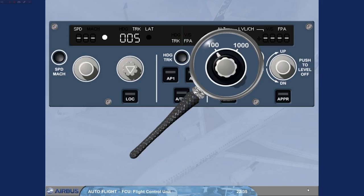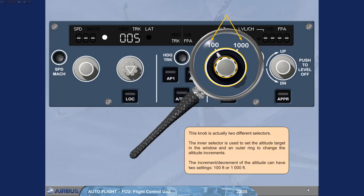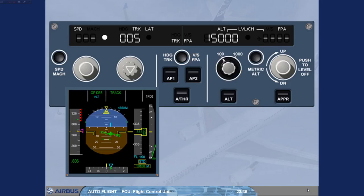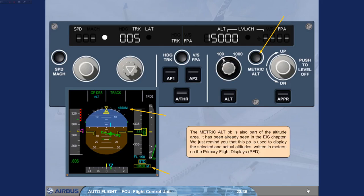This knob is actually two different selectors. The inner selector is used to set the altitude target in the window, and an outer ring changes the altitude increments. The increment or decrement of the altitude can have two settings: one hundred feet or one thousand feet. The metric altitude push button is also part of the altitude area. It is used to display the selected and actual altitudes written in meters on the primary flight displays, PFD.